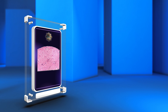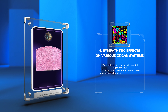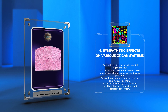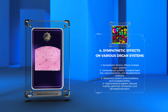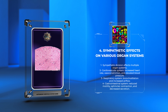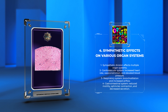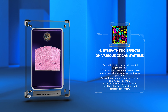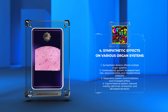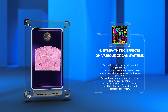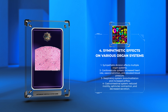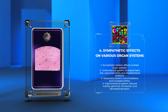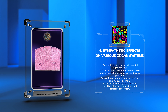The sympathetic division of the autonomic nervous system exerts profound effects on multiple organ systems. We observe sympathetic innervation in the cardiovascular system, where increased heart rate, vasoconstriction, and elevated blood pressure occur. In the respiratory system, sympathetic stimulation leads to bronchodilation and increased airflow. Sympathetic influence on the gastrointestinal system includes reduced motility, sphincter contraction, and decreased secretion. Moreover, sympathetic activation plays a role in the regulation of body temperature, pupil dilation, and piloerection.